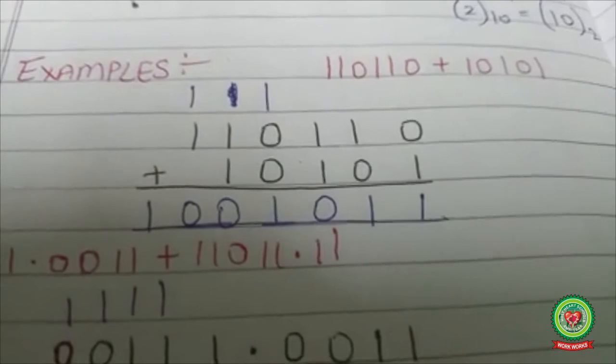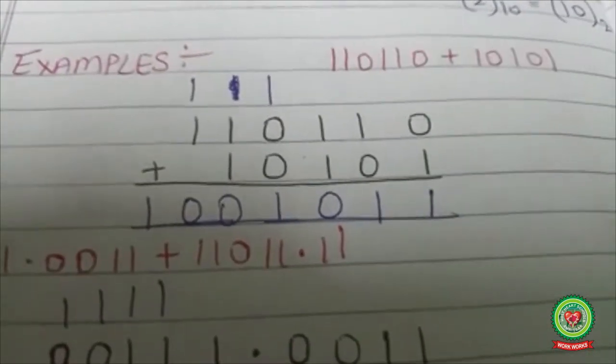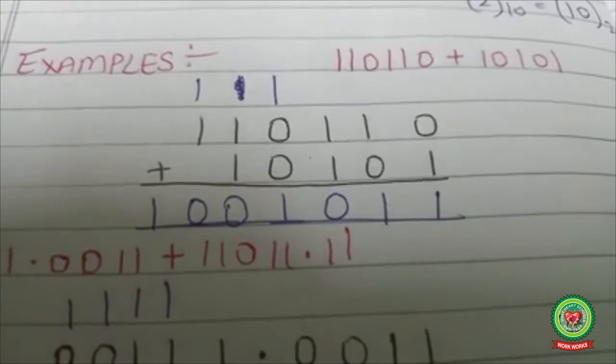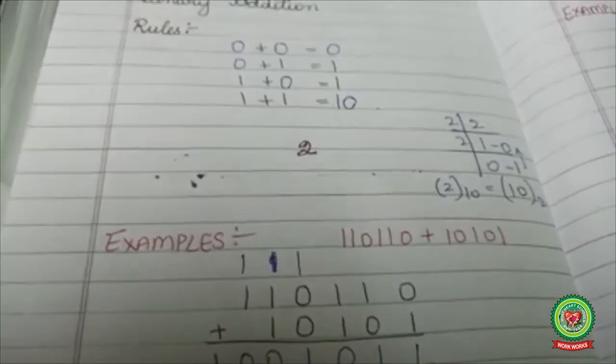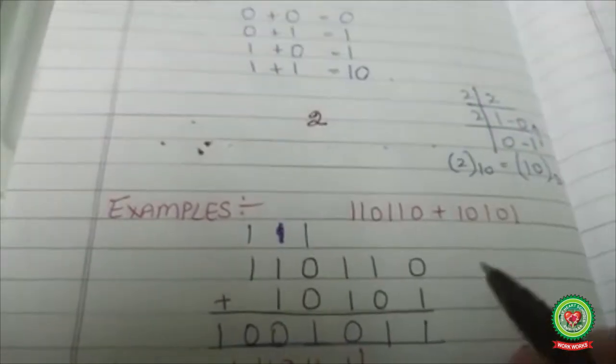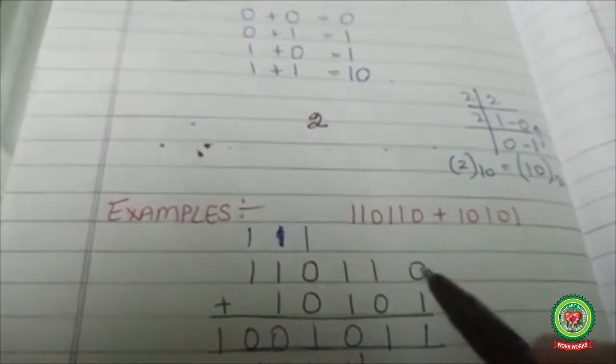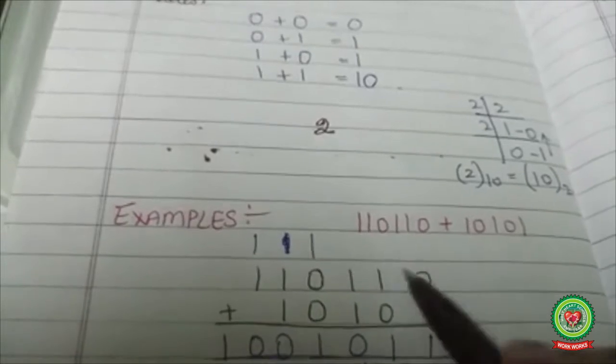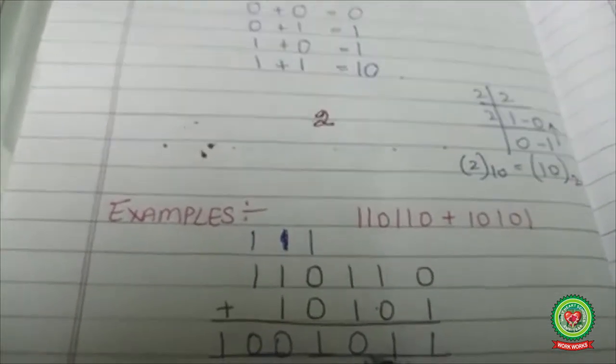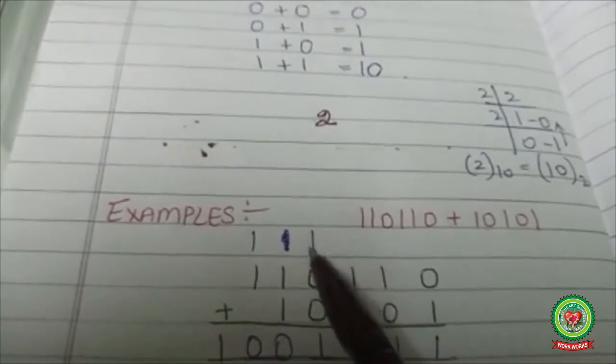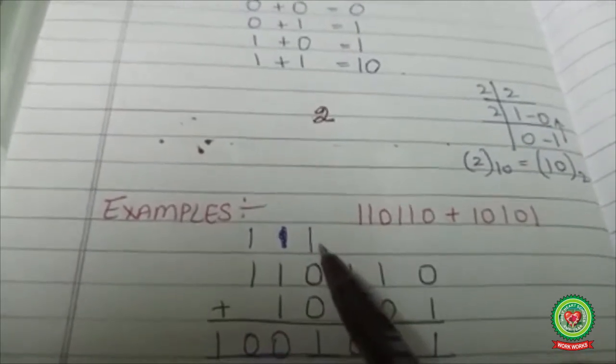I'm going to add the two numbers: 110110 plus 101101. 1 plus 1 is 10, so 0 as the base and 1 as the carry.